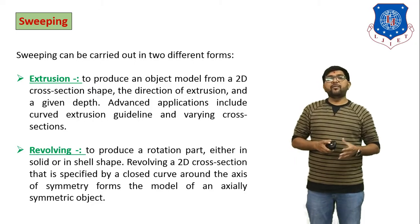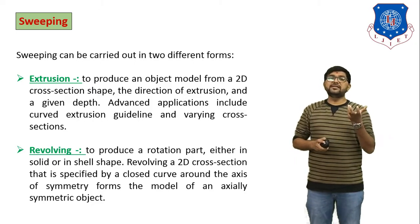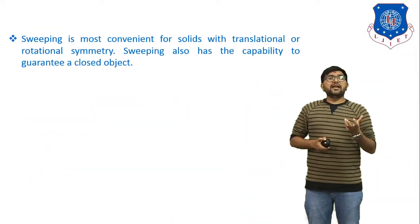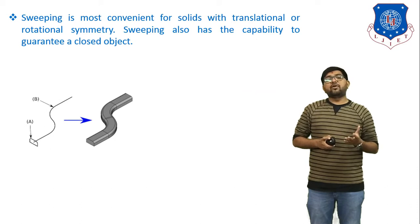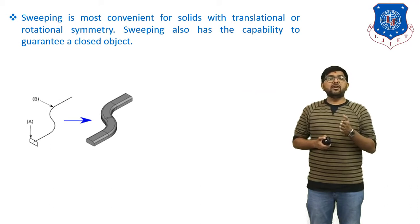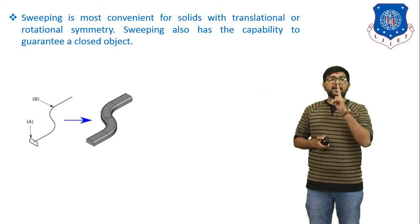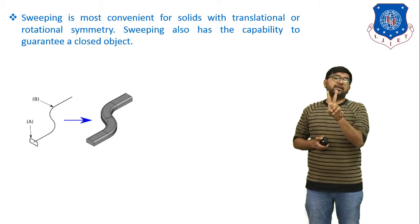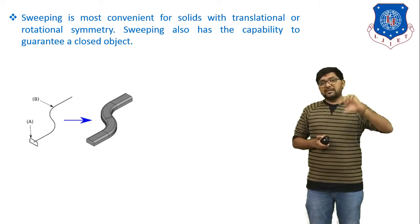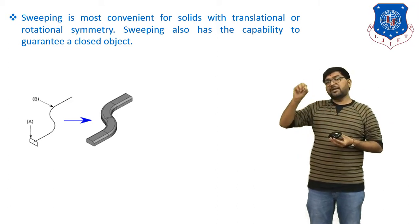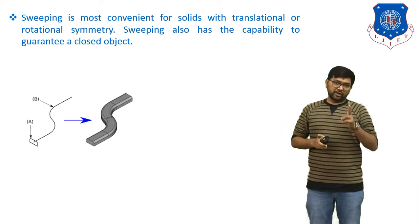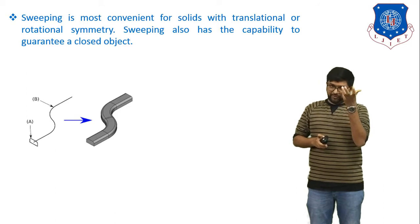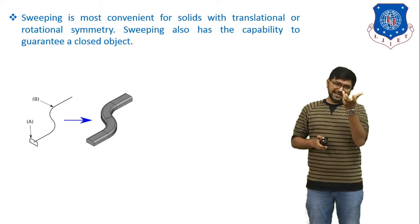Sweeping is most convenient for solids with translational or rotational symmetries. Sweeping is divided into two paths: the first is translational, where you give a path using a straight or curved line; the second is rotational symmetry, which creates a surface of revolution as already discussed in the last session.